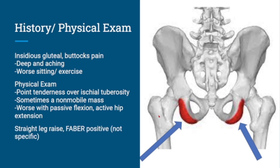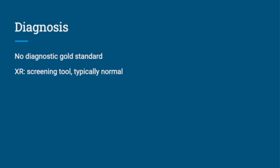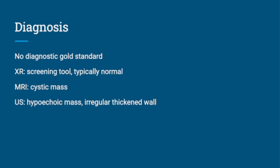Patients may have a positive straight leg raise or FABER test; however, those are not specific to ischial bursitis. There is no diagnostic gold standard — some of that is just because this disease is not well described in the literature and there's really no agreement about how to best diagnose it. X-ray is a screening tool, and MRI often shows a cystic mass.